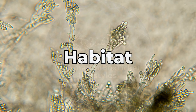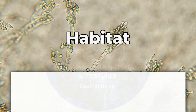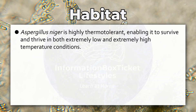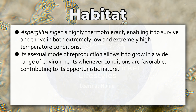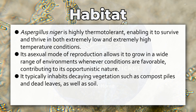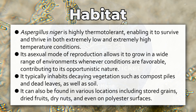Habitat of Aspergillus niger. Aspergillus niger is highly thermotolerant, enabling it to survive and thrive in both extremely low and extremely high temperature conditions. Its asexual mode of reproduction allows it to grow in a wide range of environments whenever conditions are favorable, contributing to its opportunistic nature. It typically inhabits decaying vegetation such as compost piles and dead leaves, as well as soil, and can also be found in stored grains and dried fruits.